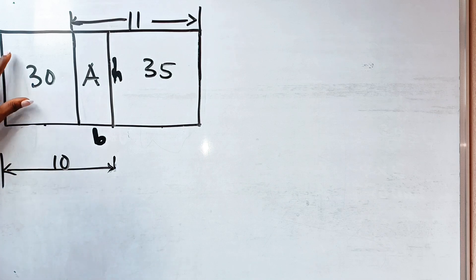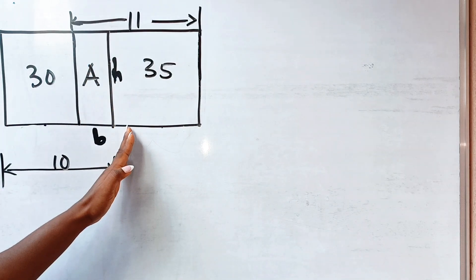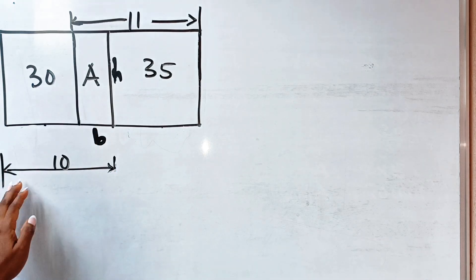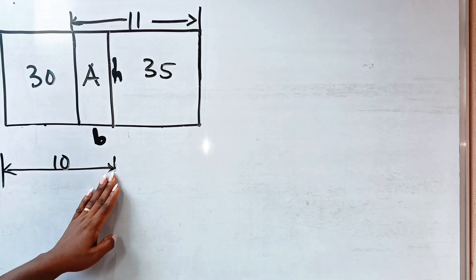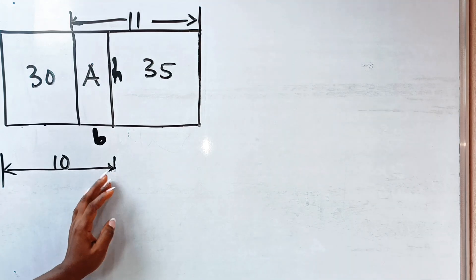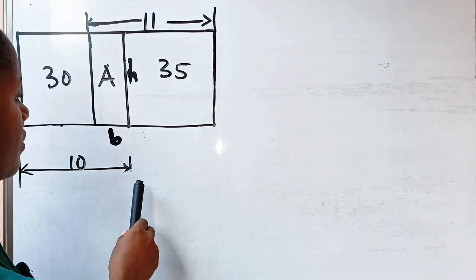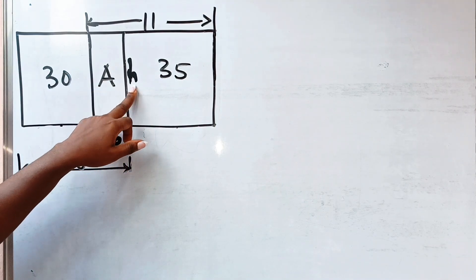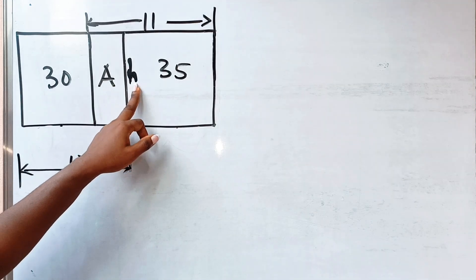Now the last but not the least method. We are told the area is 30, the height is h, and this side is b, and from here to here is 10. A can be found by getting the equation for h, so let us get the equation for h.